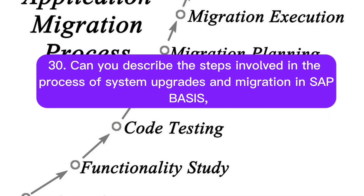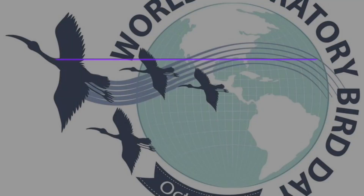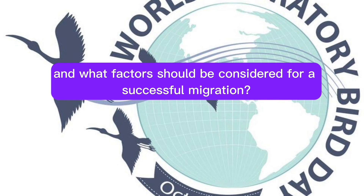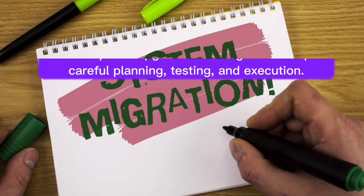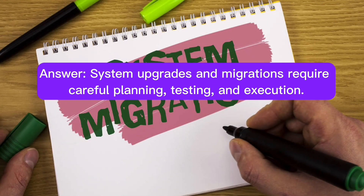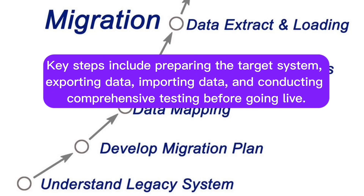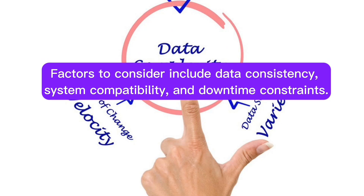Question 30: Can you describe the steps involved in the process of system upgrades and migration in SAP Basis, and what factors should be considered for a successful migration? System upgrades and migrations require careful planning, testing, and execution. Key steps include preparing the target system, exporting data, importing data, and conducting comprehensive testing before going live. Factors to consider include data consistency, system compatibility, and downtime constraints.